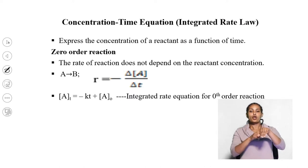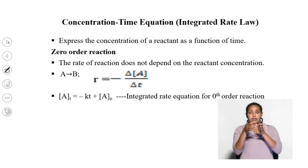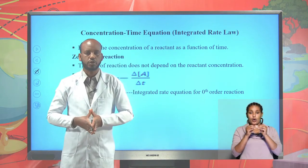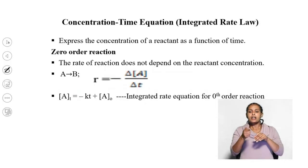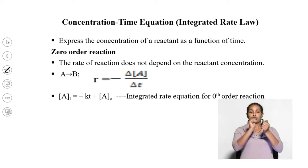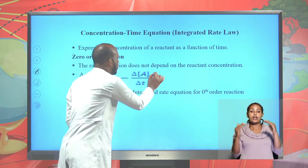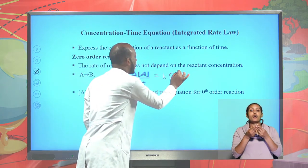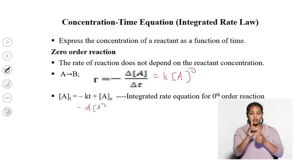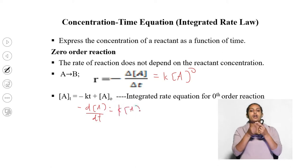Concentration-time equation, or integrated rate law. The integrated rate law expresses the concentration of a reactant as a function of time, enabling us to calculate concentration of a reactant at a given time. The rate of a reaction does not depend on the reactant concentration for a zero-order reaction. Therefore for a simple reaction A to product, rate = -d[A]/dt = K[A]^0.